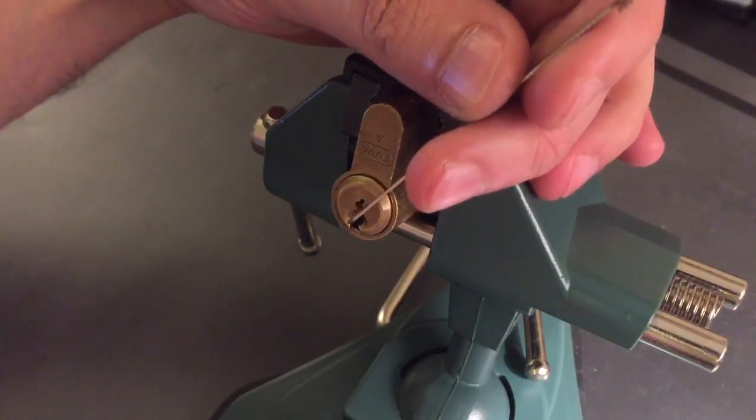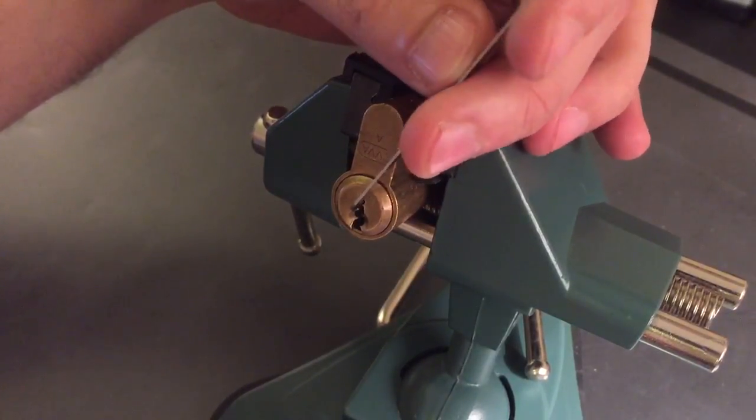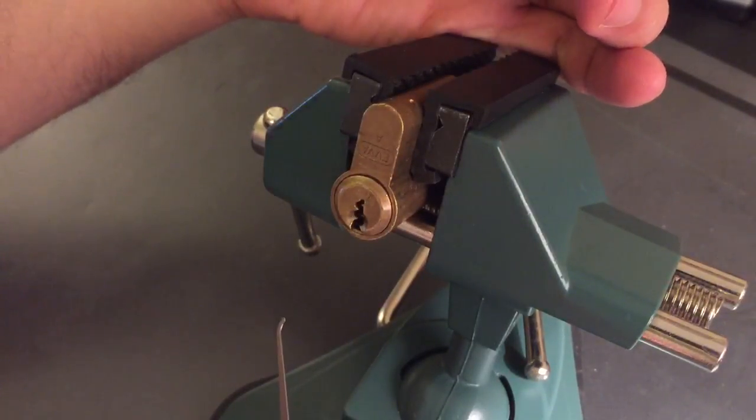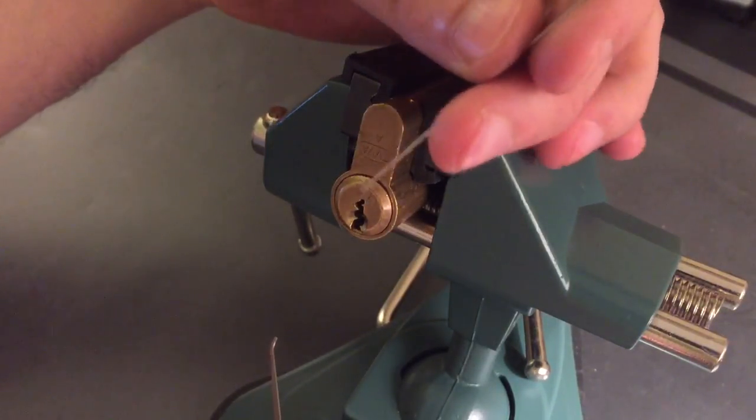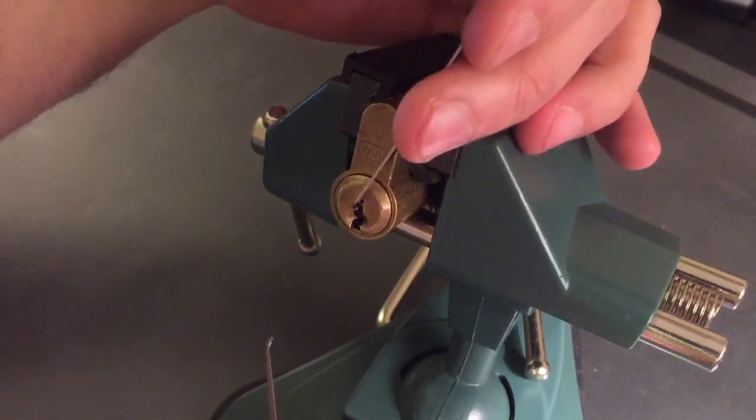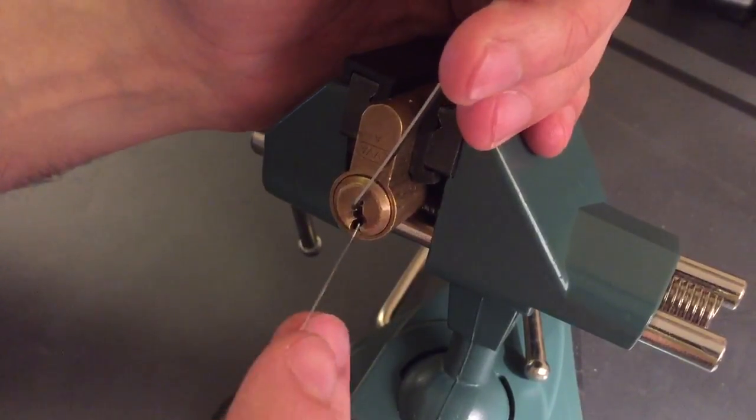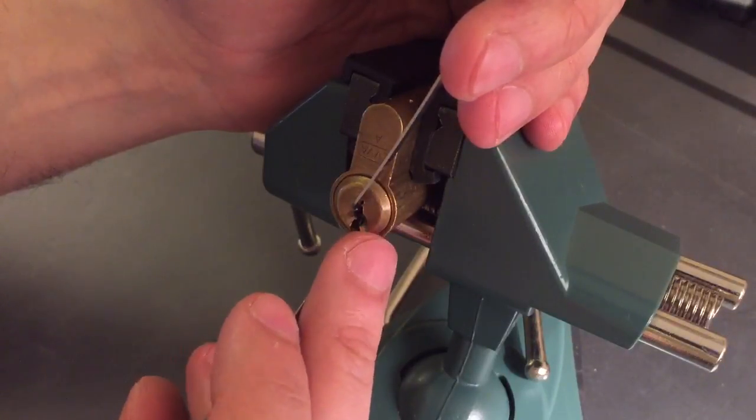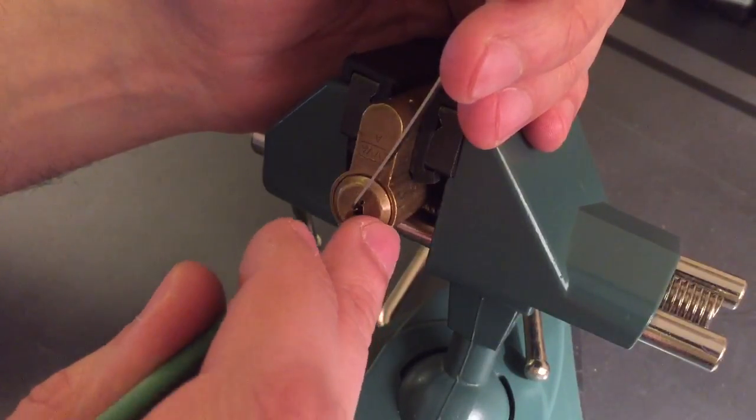I'm going to be using top of the keyway tension and my number seven hook. This has some really tough warding, so that's going to be the biggest issue with this lock will be navigating the warding. Nothing out of one. It's springy.